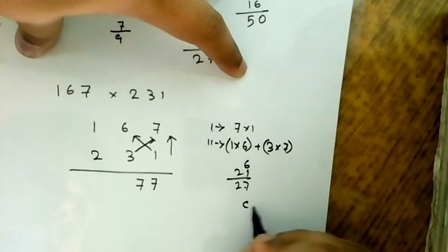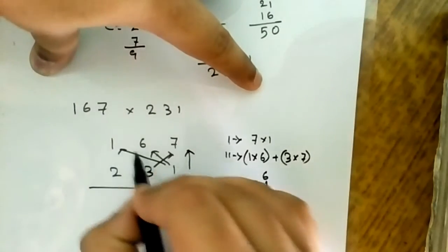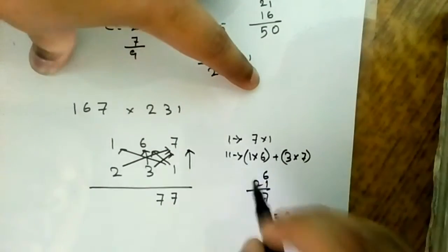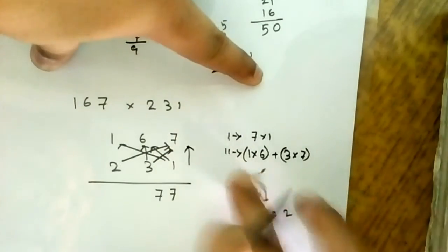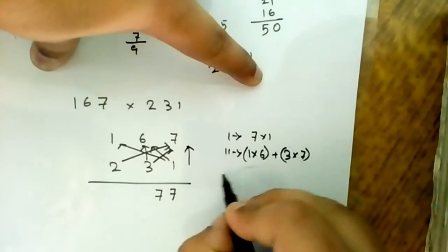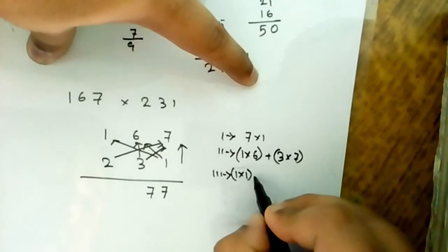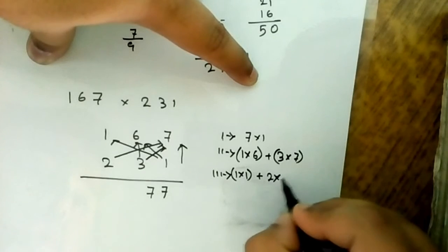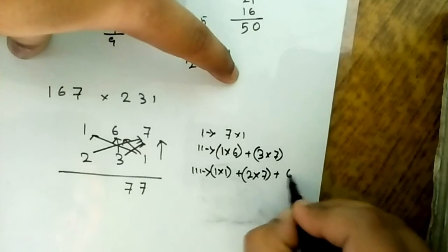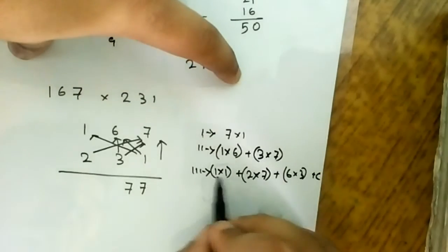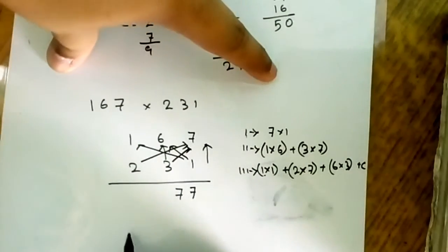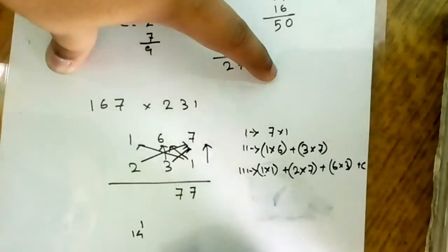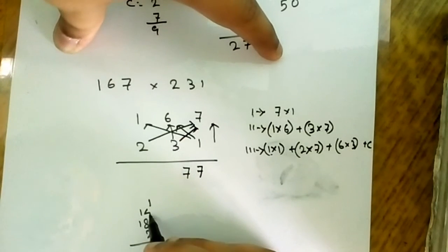In the third process, 1 into 1 plus 2 into 7 plus 6 into 3 plus carry if any. 1 into 1 is 1, 2 into 7 is 14, 6 into 3 is 18, and the previous carry was 2. So 1 plus 14 plus 18 plus 2 equals 35. I will write 5 here, carry is 3.